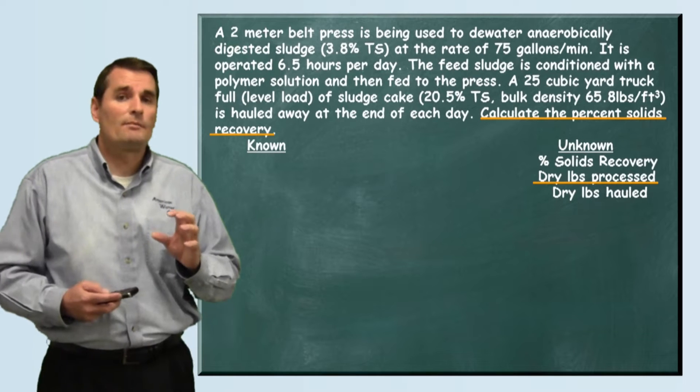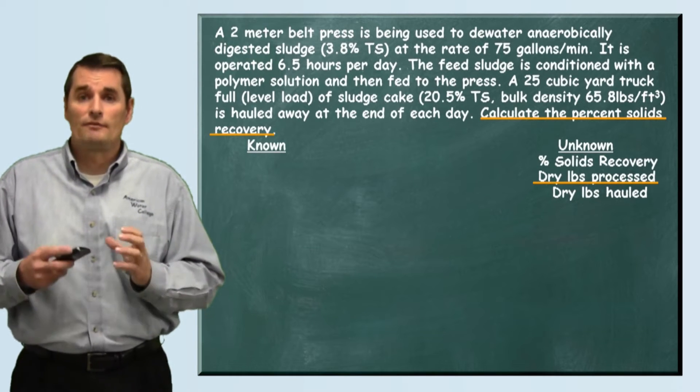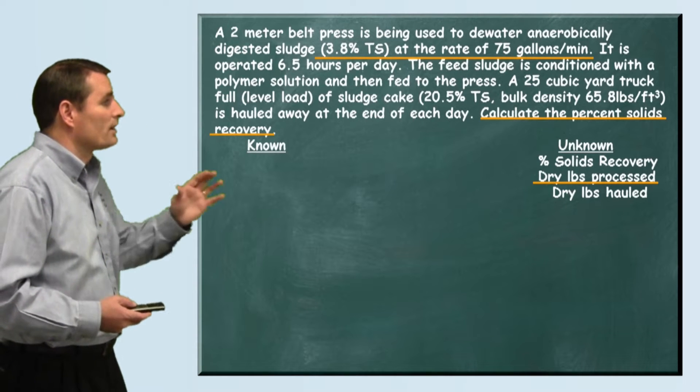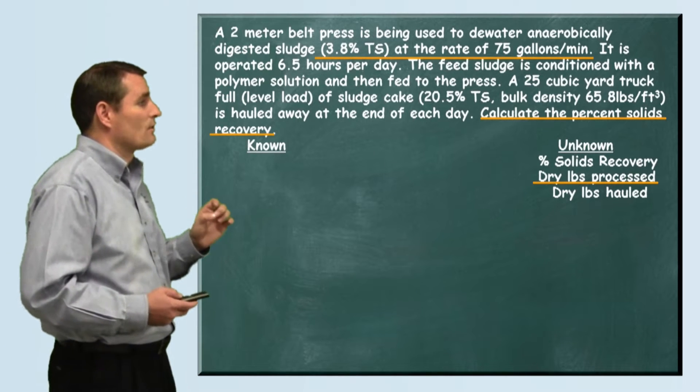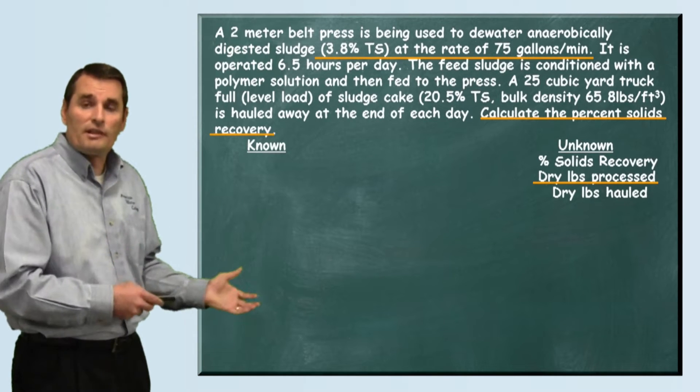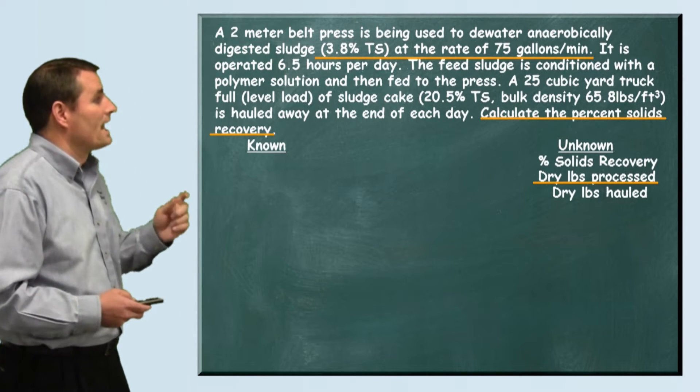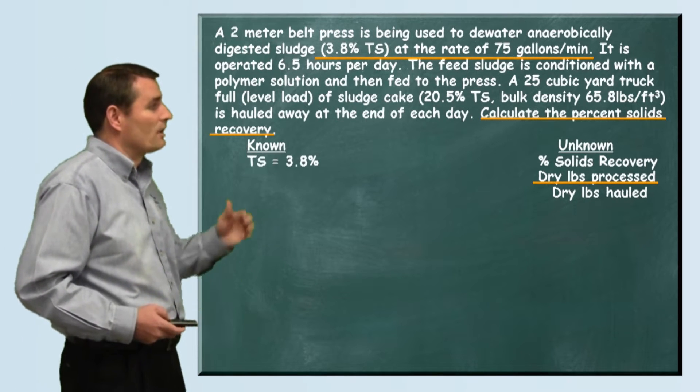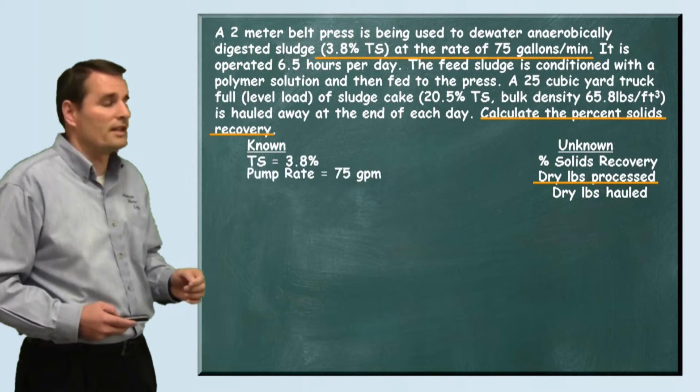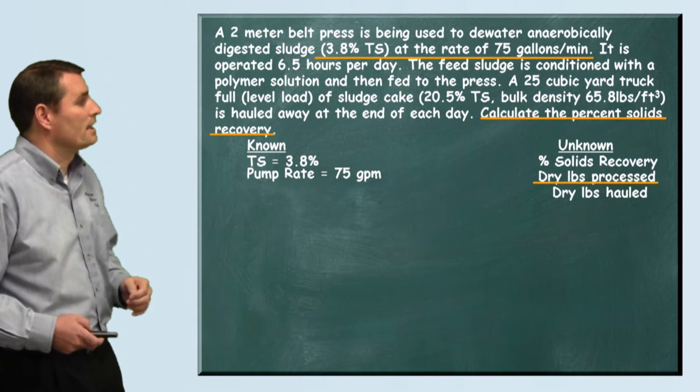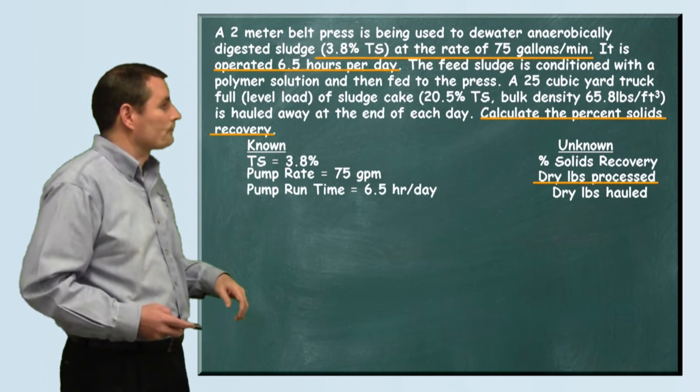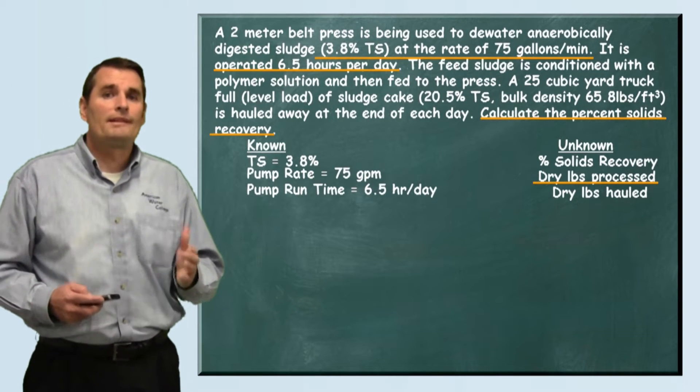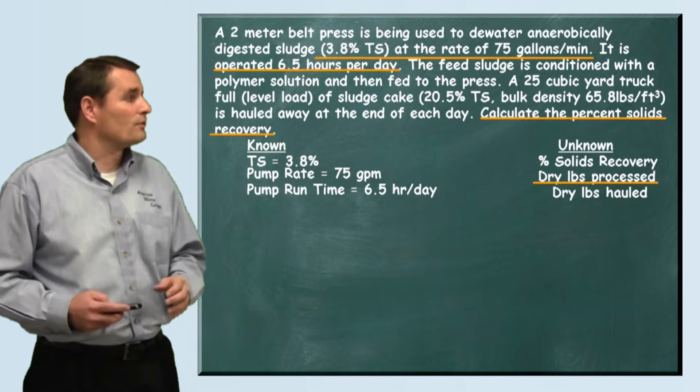The first part of this problem is going to be to calculate how many pounds of dry sludge are processed. They told us that 3.8 percent total solids is the concentration of the sludge going to the press and that the pump pumps at a rate of 75 gallons a minute. They also told us that we're running our pump 6.5 hours per day.